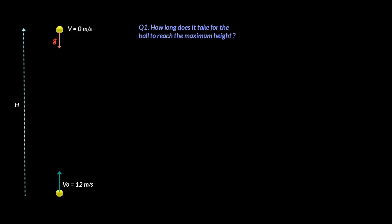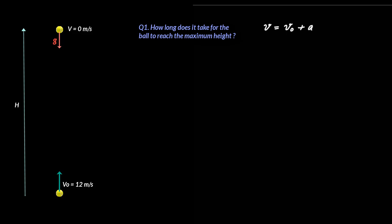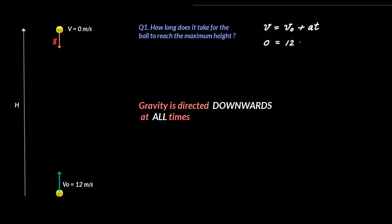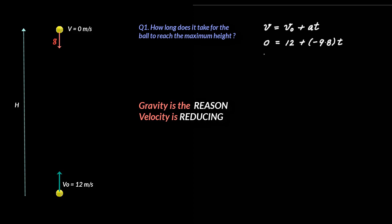This makes sense because if the velocity had not become zero, the ball would have kept going up. So we can use the formula V = V₀ + at to find the time to reach maximum height. The final velocity V is zero, the initial velocity V₀ is plus 12 meters per second — positive because it points upward — and g is minus 9.8 meters per second squared, directed downwards at all times. This downward pull is the reason the velocity reduces as the ball moves up. Solving for t, the time taken to reach the top is 1.2 seconds.